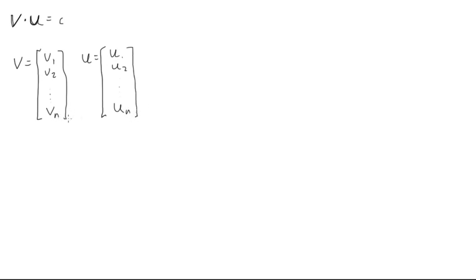Now because these both have n components, or n's the same, we can take the dot product. And if we did that, it would look like this. We'd say v dot u is equal to, and how you do this is you take the first components and multiply them together. So v1 times u1.